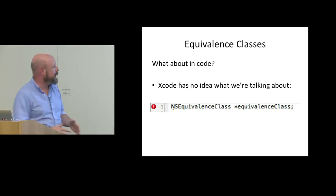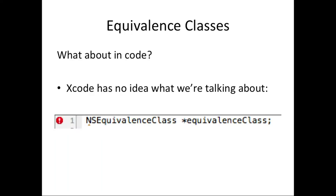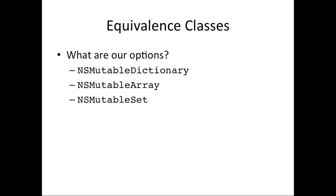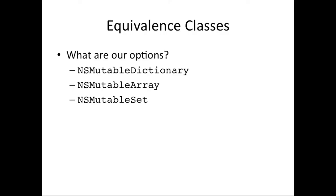What does this look like in code? Xcode has no idea what NSEquivalentClass is — we can't just get it for free. So we have to think about how we would actually implement this. We've got options like NSMutableDictionary, NSMutableArray, and also something called an NSMutableSet. Dictionaries map keys to values. An array is a list of items in a specific order. A set is like an array but the order of items is not preserved — it's just a collection of items.